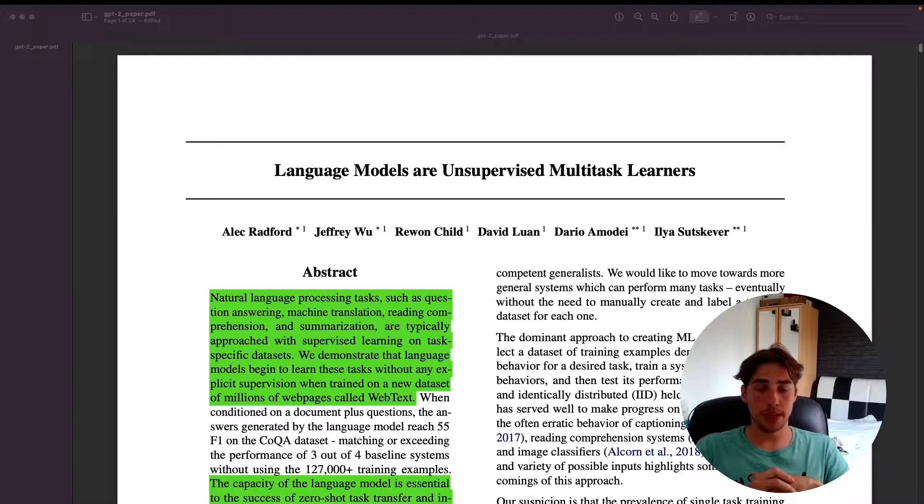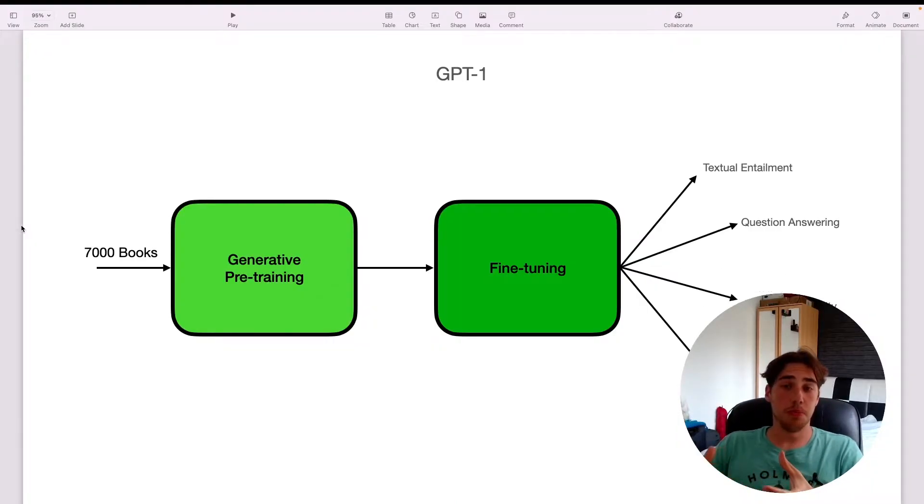Without further ado, let's dive into it. The main point of GPT-1 was the idea of self-supervised learning. We pre-train the model on 7,000 books, and it gains the understanding of the language, then we fine-tune it for certain tasks. Self-supervised learning allows us to not use so much labeled data and not train the model for every specific task separately. You just pre-train it and then fine-tune.